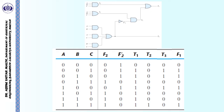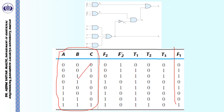For this truth table, we can very easily say for which combination of A, B and C, F2 is equal to 1. And similarly, for which combination of A, B and C, F1 is equal to 1.